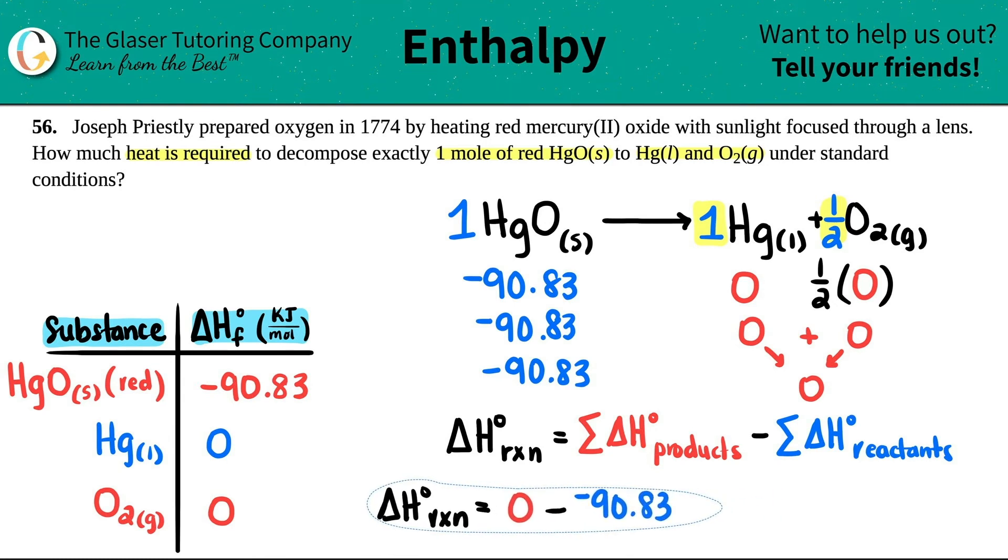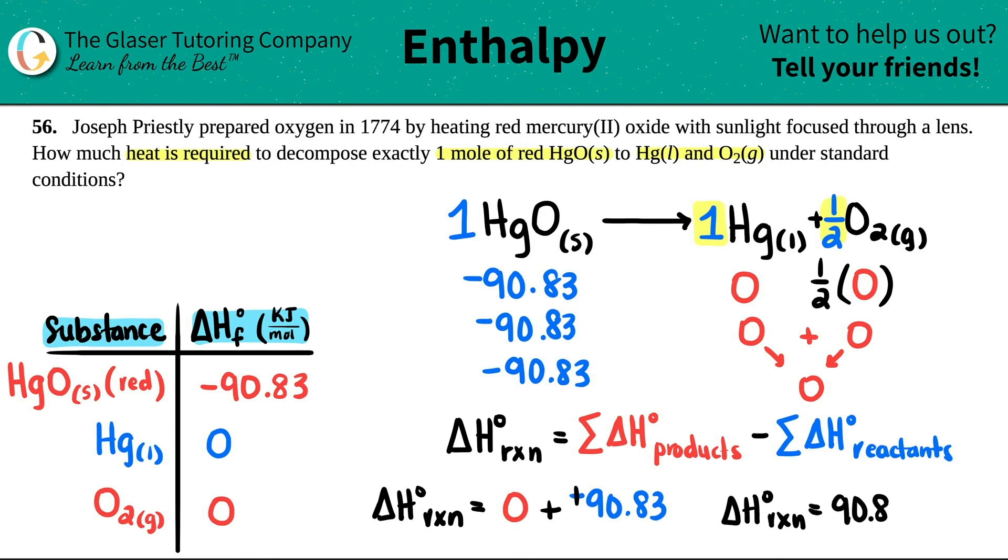If we just do the math, zero minus a negative number, you keep change, change, right? So my delta H for the reaction would be 90.83. And this would be kilojoules per mole. Now, since they said that we're still using exactly one mole of HgO, and this, basically, this formula is saying that for every 90.83 kilojoules will be produced under one mole of either one of these. So in this case, we can kind of just drop the mole. So my answer, basically, if I just put it up here, the delta H or the heat that would be required would be 90.83 kilojoules. That's it.